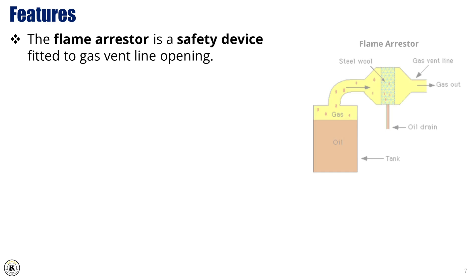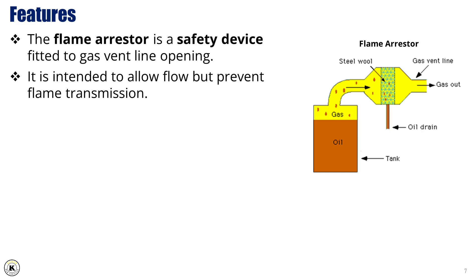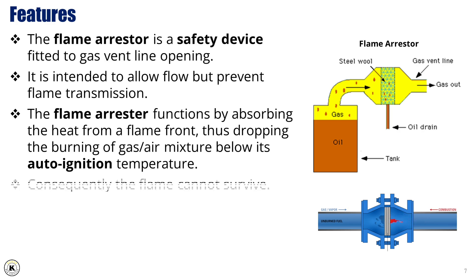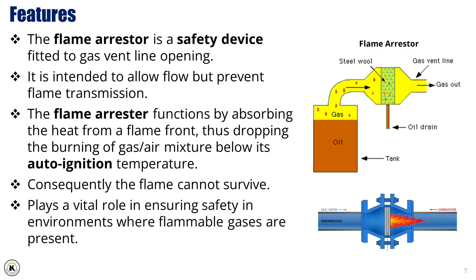The flame arrester is a critical safety device fitted to the gas vent line opening. Its main purpose is to allow the flow of gas while at the same time preventing flame transmission, which could pose a serious hazard. The flame arrester functions by absorbing the heat from a flame front, dropping the temperature of the burning gas-air mixture below its auto-ignition temperature. Consequently, the flame cannot survive, and the system remains protected from the risk of backfire or explosion.